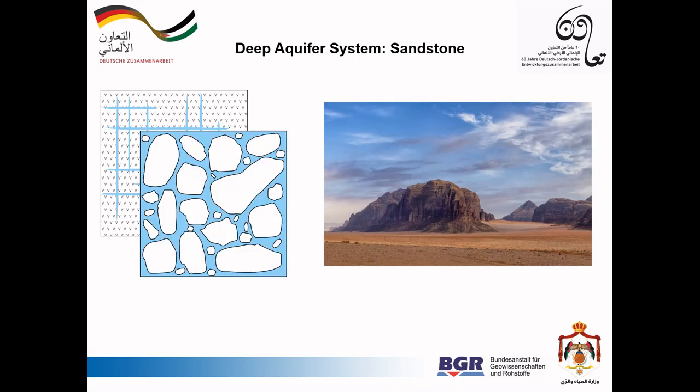The deep aquifer system consists of sandstones, where the water flows between the grains of sand and also through cracks and fractures. For example, it can be seen on the surface at Wadi Rum.